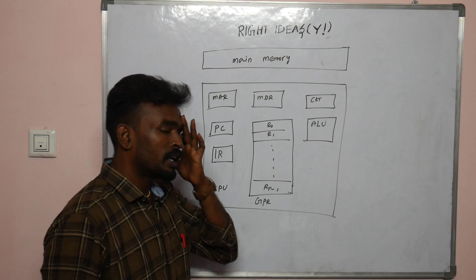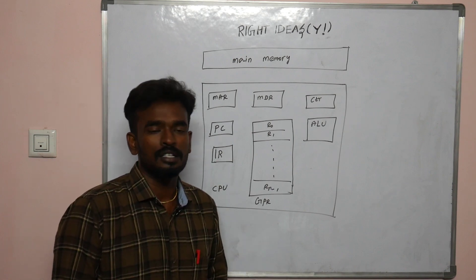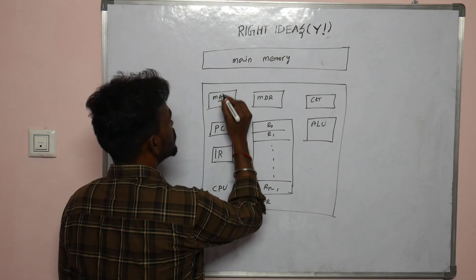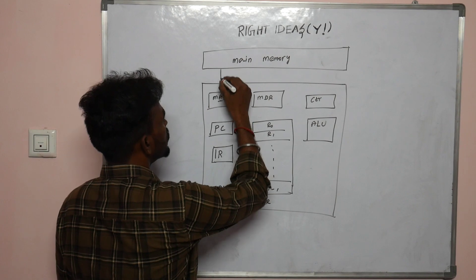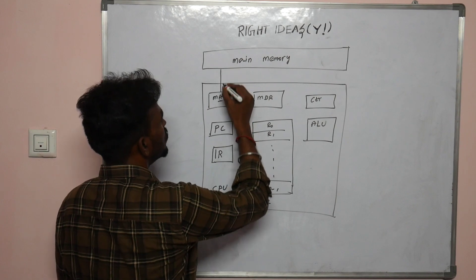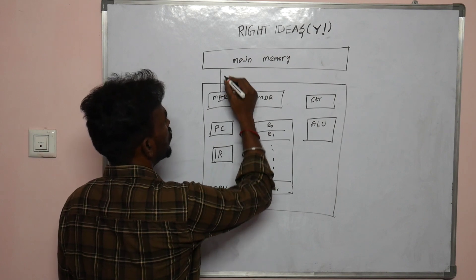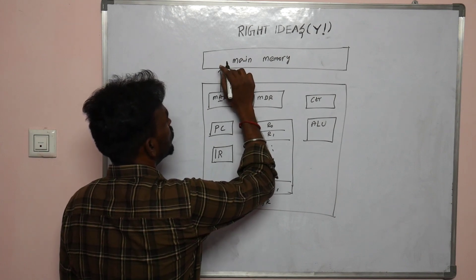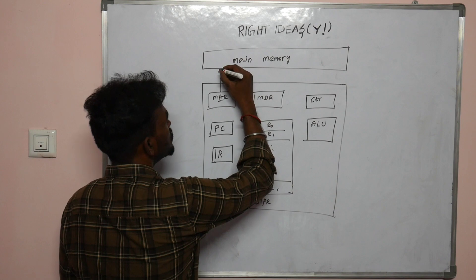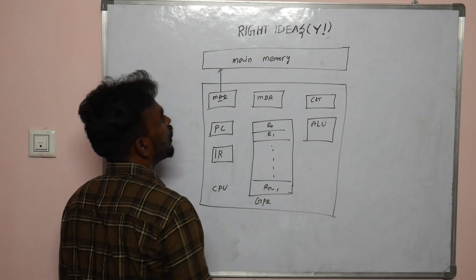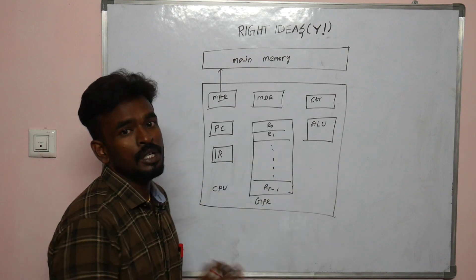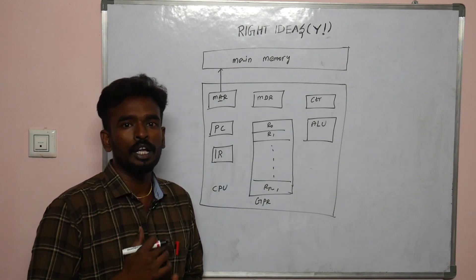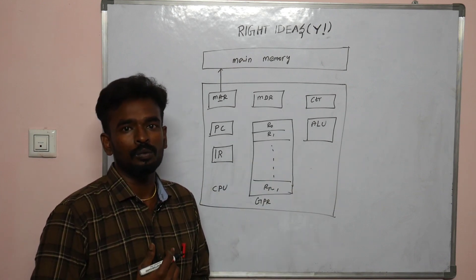MAR is the Memory Address Register. It is unidirectional — it holds the address corresponding to the program location being accessed.